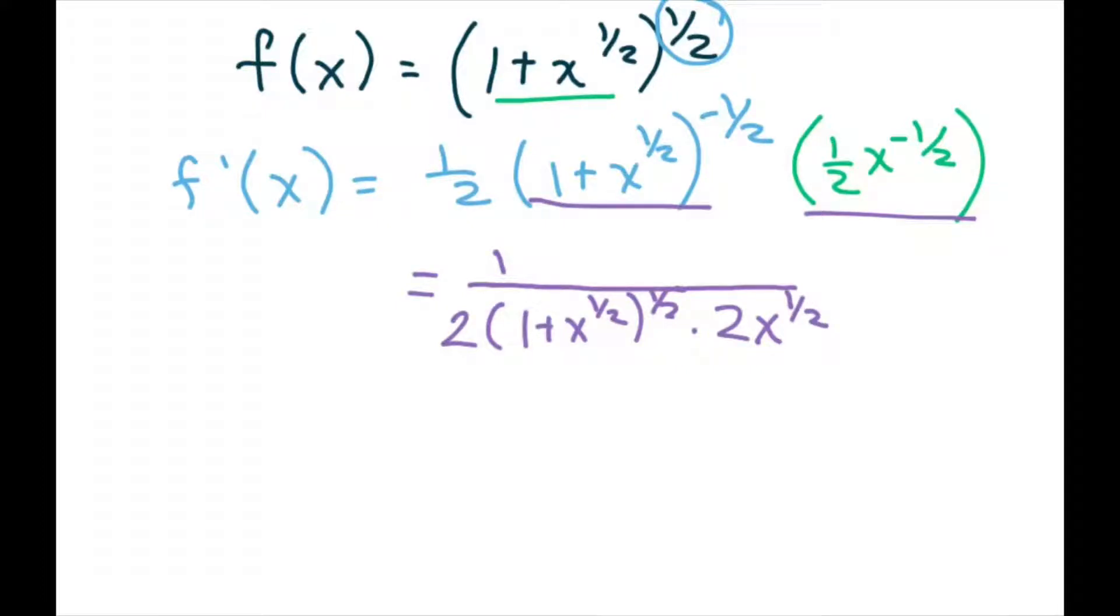So this simplifies. We can multiply the 1 half times 2. That's going to equal 1 fourth. And then if I do this piece next, that's going to be 1 over square root of x. I'm taking this piece here. And then this piece here would just be 1 over square root of 1 plus square root of x.